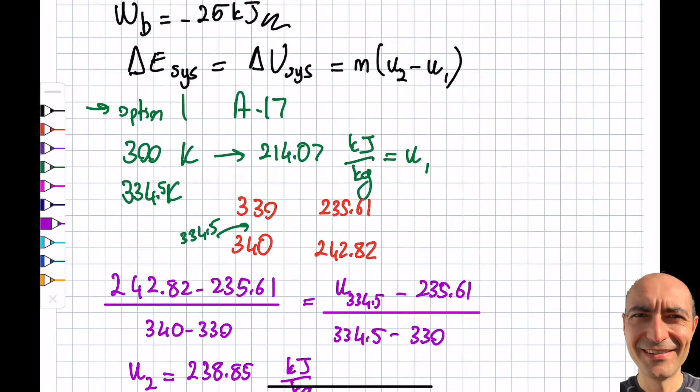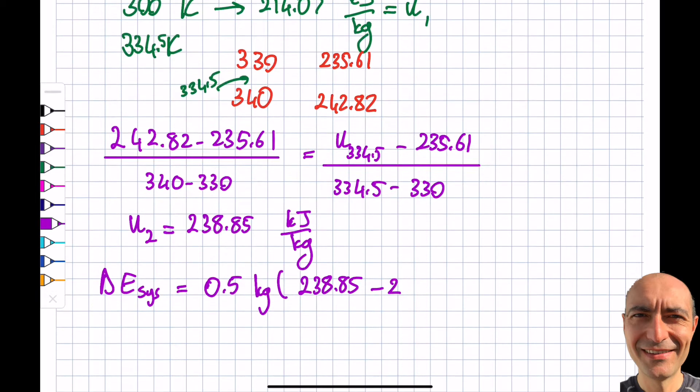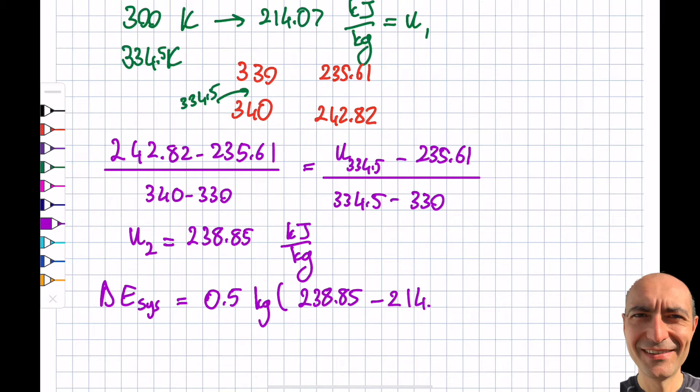I go back and insert to my equation. Delta E of the system will then be M, which is 0.5 kilograms, times U2, which is 238.85 minus 214.07. This is kilojoule per kilogram. Kilograms cancel. I get myself 12.39 kilojoules. This approach is perfect, but students sometimes shy away from going to the later appendices or rather the tables in the appendix. So they shy away, they kind of stay with where A2 is.